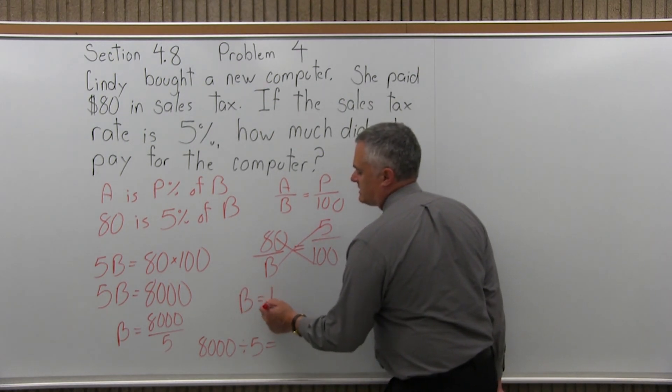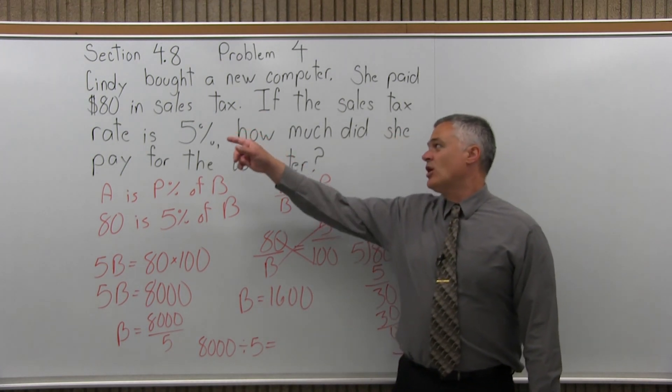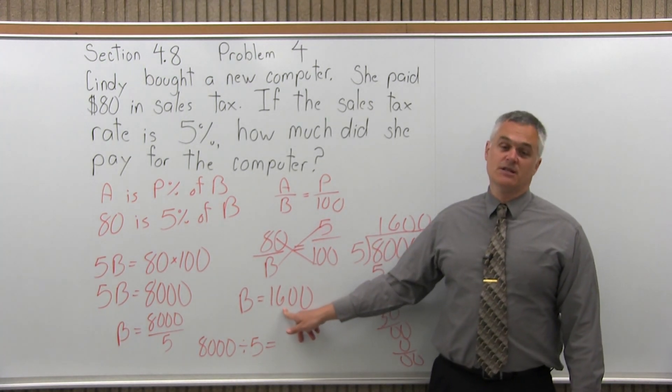B is 1,600. So what does that mean? That means that if Cindy paid $80 in sales tax and the tax rate is 5%, then the computer she bought costs $1,600.